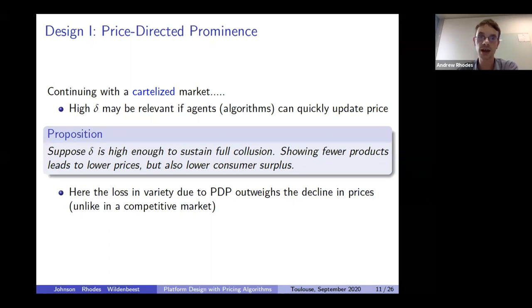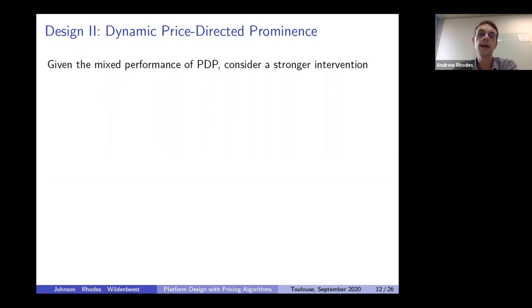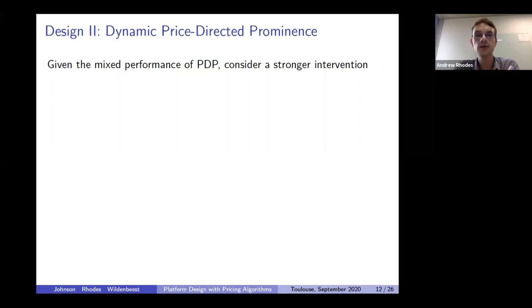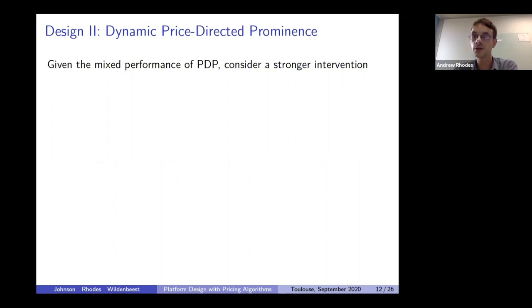For that reason, we look at another, subtler intervention called dynamic price directed prominence. The idea behind this policy is to reward firms that charge low prices today not just with extra demand today, but also demand in the future. We'll show that with this policy, it's much easier to undermine collusive schemes, even when sellers are very patient.